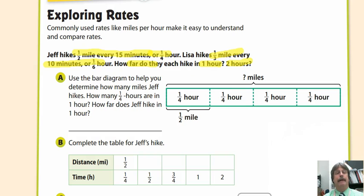We have a bar diagram here. Use the bar diagram to help determine how many miles Jeff hikes. How many quarter hours are there in one hour? One, two, three, four. That means he's going to hike one half mile every quarter hour. One half plus one half is one, so one plus one is two.